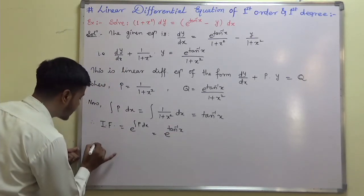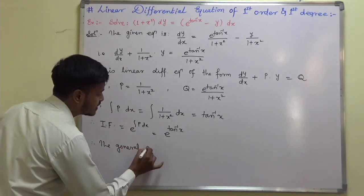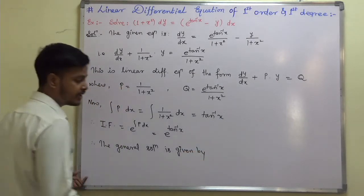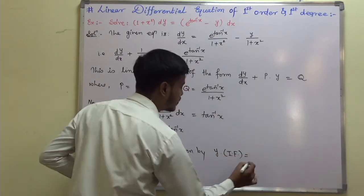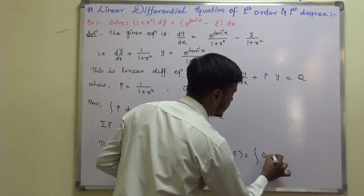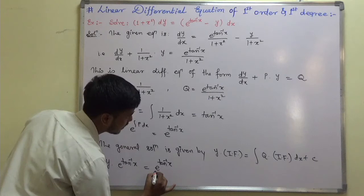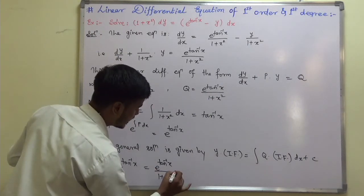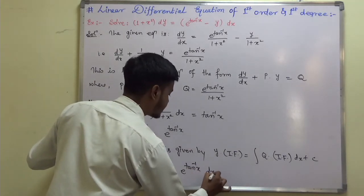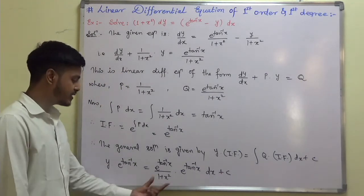So this is my integrating factor. At last, we find the solution. Therefore the general solution is given by: y × (integrating factor) = integration of Q × (integrating factor) dx + C. Now just substitute these values: y · e^(tan⁻¹x) = integral of [e^(tan⁻¹x) / (1 + x²)] · e^(tan⁻¹x) dx + C.